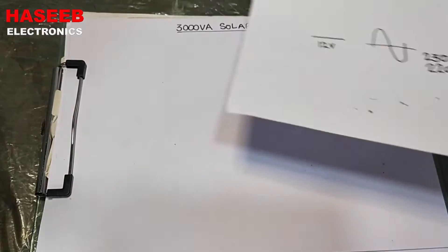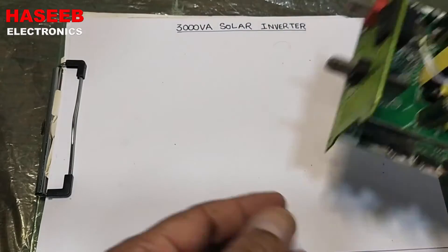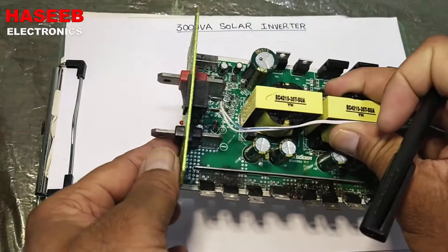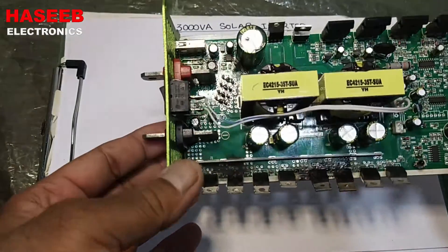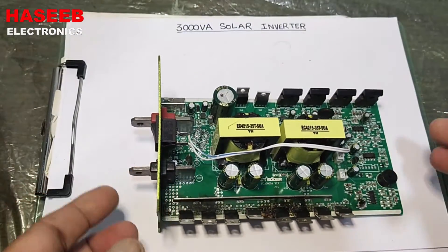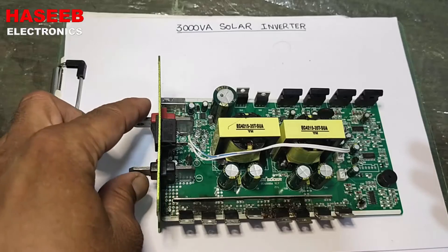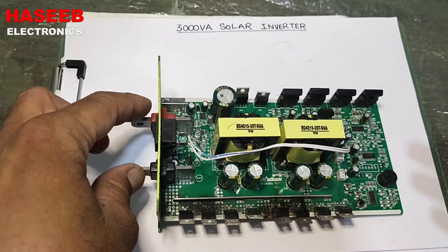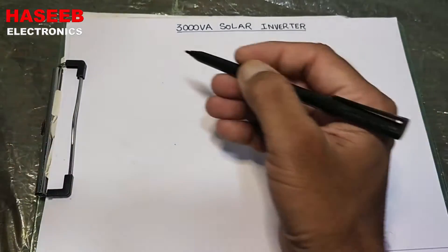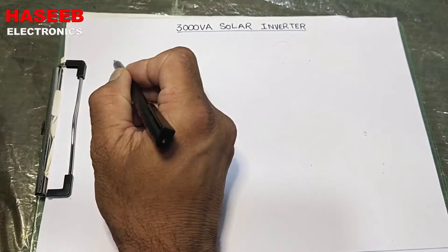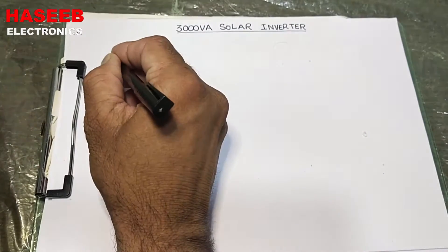In part one of this video we will discuss just the block diagram of this inverter — the configuration of this circuit. As mentioned, it will receive 12 volt DC input, so let's draw the first stage.